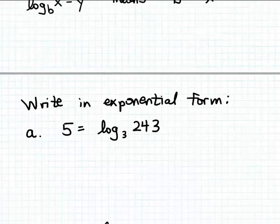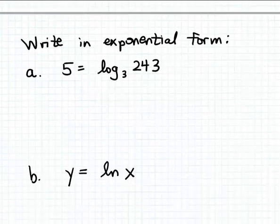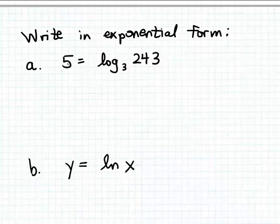So in this equation, where we have 5 is equal to the log base 3 of 243, if we just apply that basic definition of logarithms, that would tell us that 3 raised to the fifth power is equal to 243.